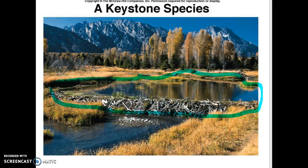This is just an example of how the keystone species is the most important species to maintain the diversity. When we remove them, there are significant consequences to the entire community. It disrupts and sometimes can destroy the entire stability of the community.